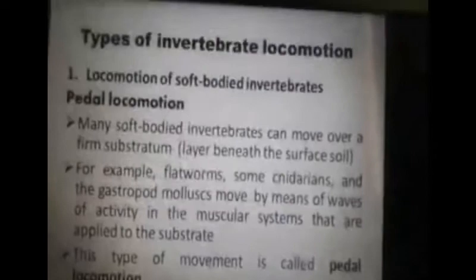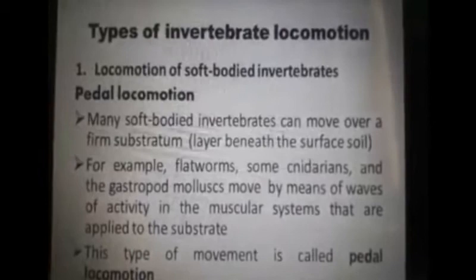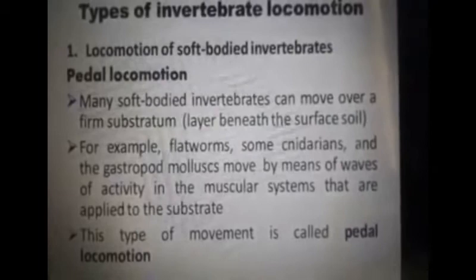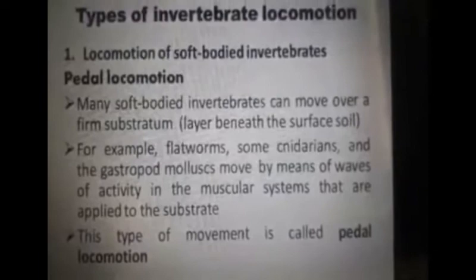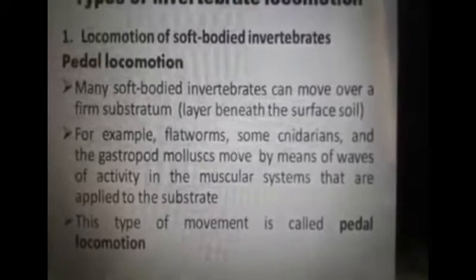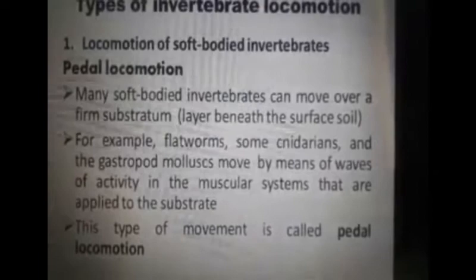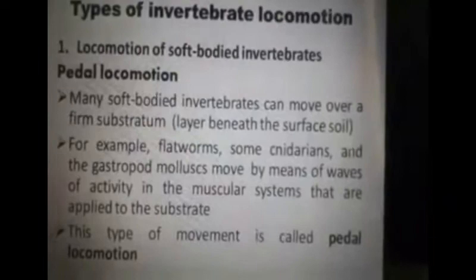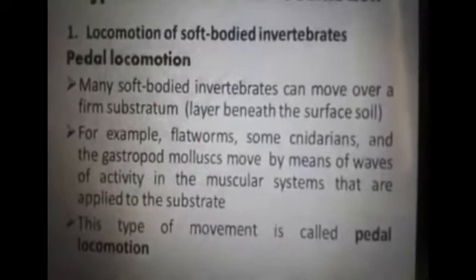Types of invertebrate locomotion. The first is pedal locomotion in soft-bodied invertebrates. Many soft-bodied invertebrates can move over a firm substratum — the layer beneath the soil. For example, flatworms, some cnidarians, and gastropod mollusks move by means of waves of activity in the muscular system that are applied to the substratum. This type of movement is called pedal locomotion.